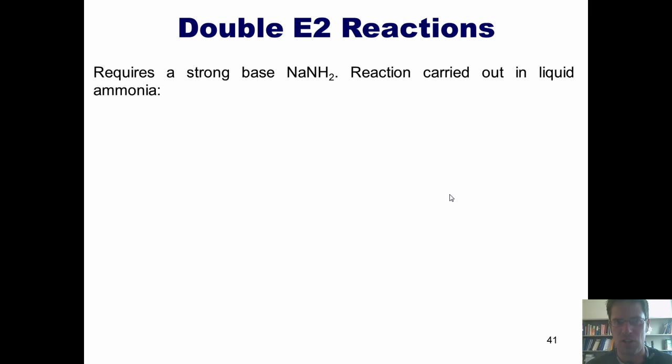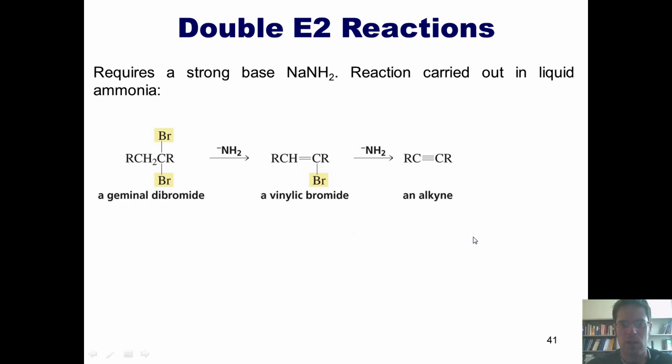There's another type of elimination reaction that I like to call the double E2 reaction, although I'm not sure our book actually gives it that name. Here's what we can do. If we've got a molecule like this, where I've got two leaving groups stuck on a carbon, I can do an elimination twice. It requires a strong base such as NaNH2, which is also called sodamide. What occurs is a molecule of NH2- strips the proton here at the carbon next door, pumps the electrons down, and kicks off the bromide to give me this intermediate. A second molecule of NH2- can then do the same thing again to give me an alkyne.